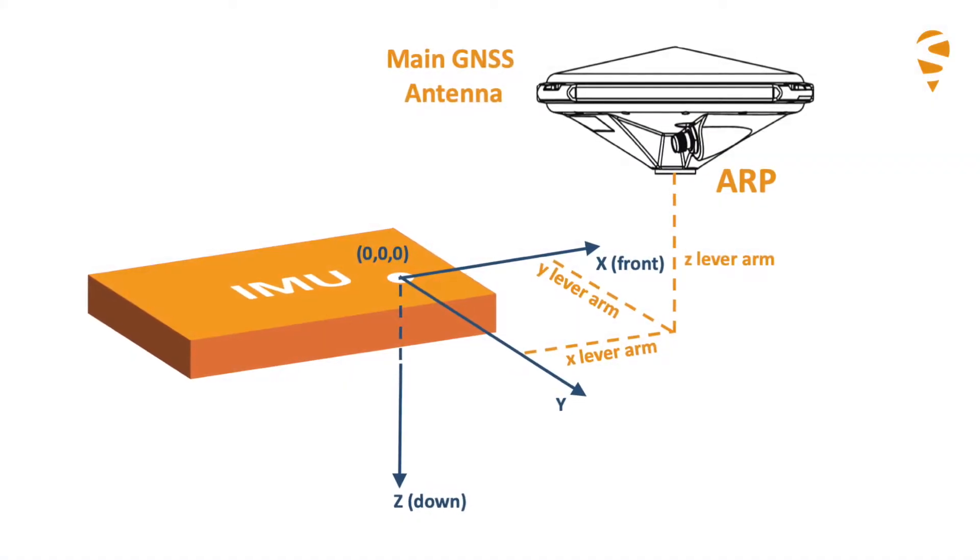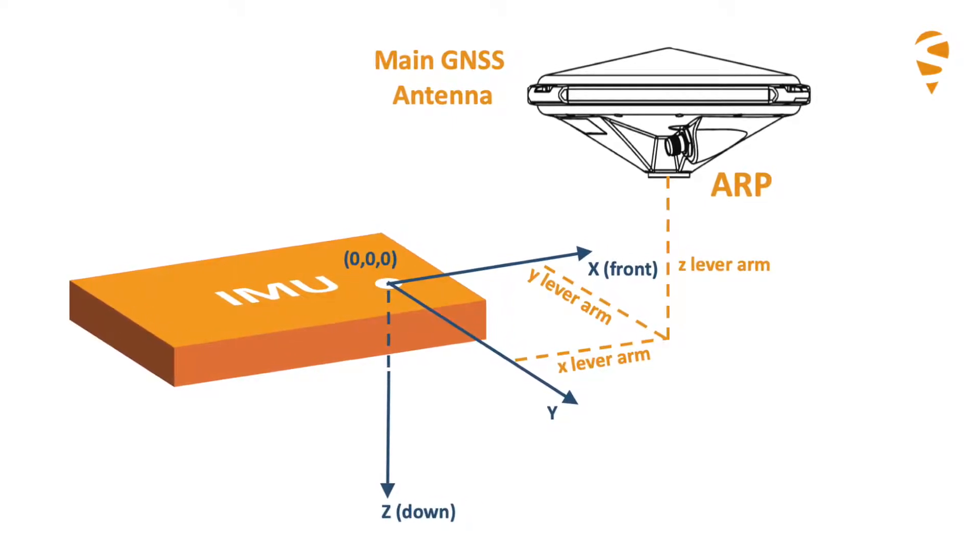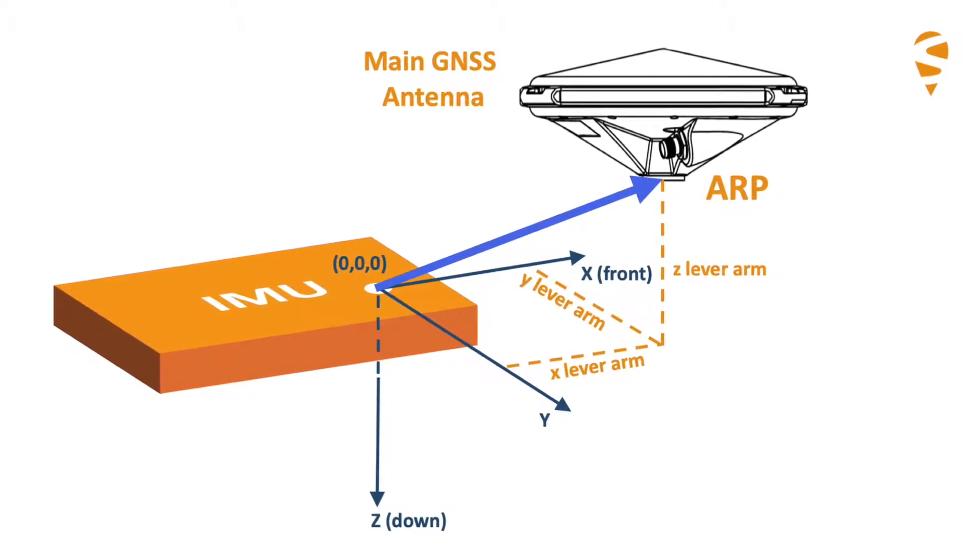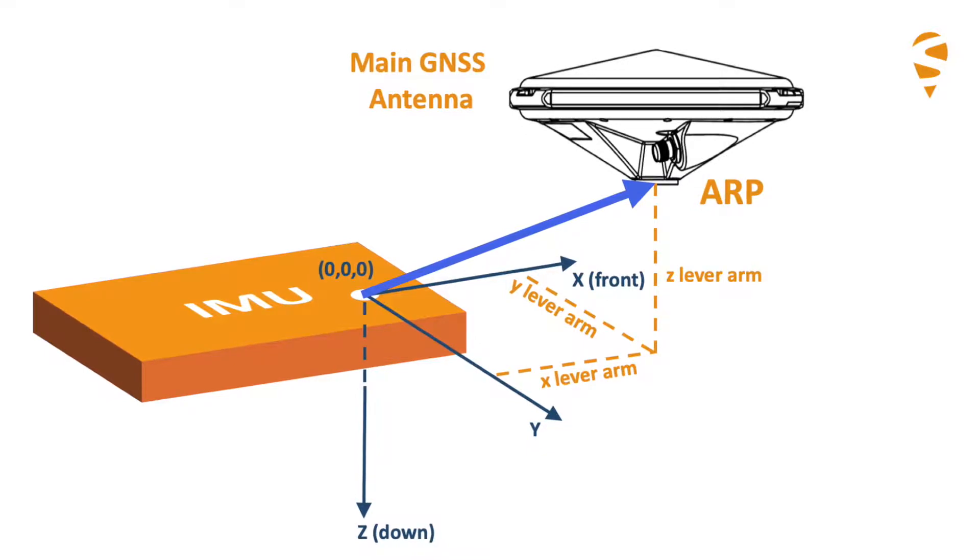First, let me explain how the lever arm is defined and why it's important. The antenna lever arm is the vector from the IMU reference point to the GNSS antenna reference point, or ARP.